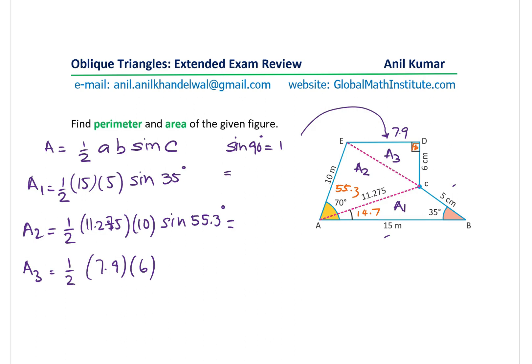So let's calculate these values, and then we'll add them. So we have 0.5 times 15 times 5 times sine of 35, and that gives us 21.5.